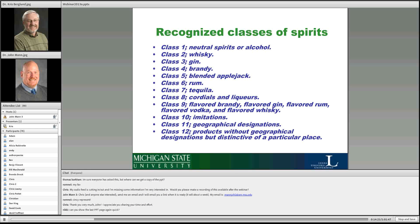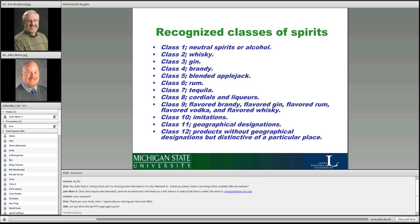There's something called the standards of identity, and within these, everything is defined. It's not really advisable to make something that's not on the list, because the way this is controlled by the federal government is that you have to submit a label for approval. If they don't see it on the list, you have to file additional paperwork which slows everything down. These are the classes of spirits people look at normally, and they're all spelled out in detail in Title 27.